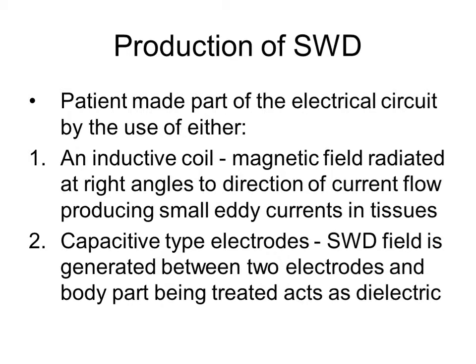There are two ways of applying shortwave diathermy, both of which are dependent upon making the patient an integral part of the electrical circuit. An inductive method involves the flow of electromagnetic energy through a coil. A magnetic field is set up at right angles to the coil, and it is this that creates small electrical currents in the tissues. In the past, this method involved wrapping the limb in an inductive coil, but more modern methods use a coil within a drum applied at right angles to the tissues. The capacitive method involves placing the tissue to be treated directly between two electrodes, and the body acts as a dielectric, completing this circuit and conducting the electromagnetic current from one electrode to the other.